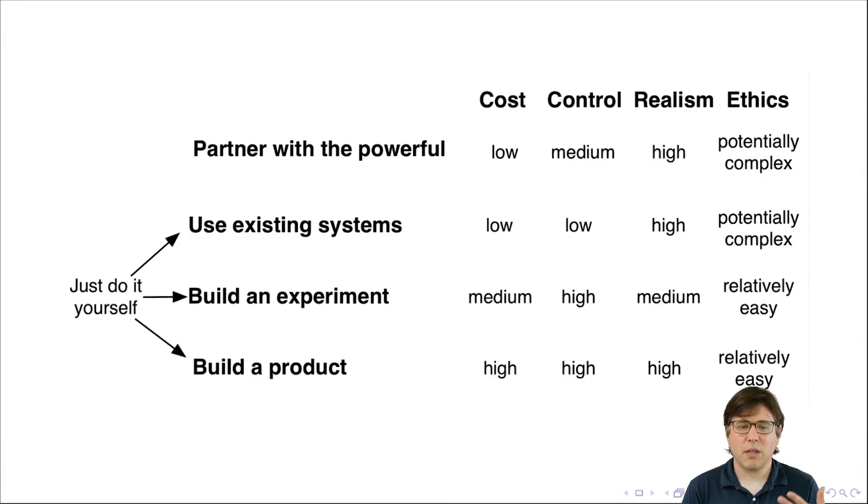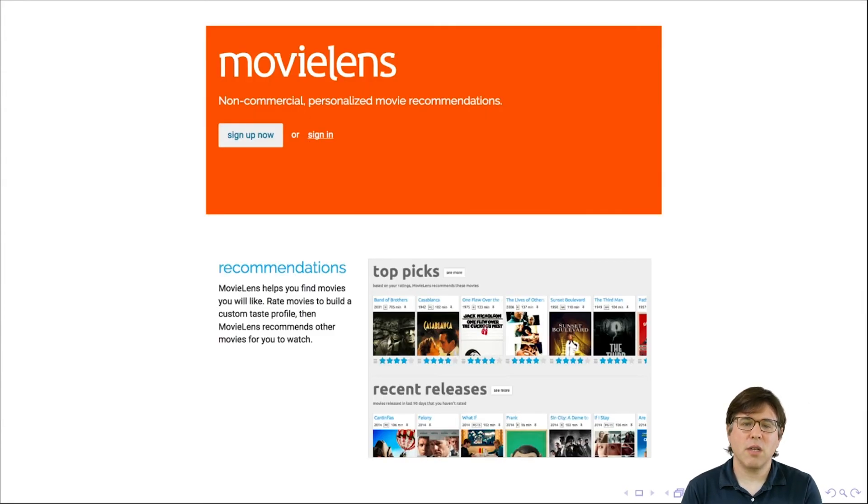So finally, I want to talk about a third strategy for doing it yourself, which is building a product. So this is Movie Lens. Movie Lens is a website built by researchers that allowed them to make movie recommendations to people. This was built before Netflix created its movie recommendation system. And so at the time, this was a valuable service that many people wanted to use.